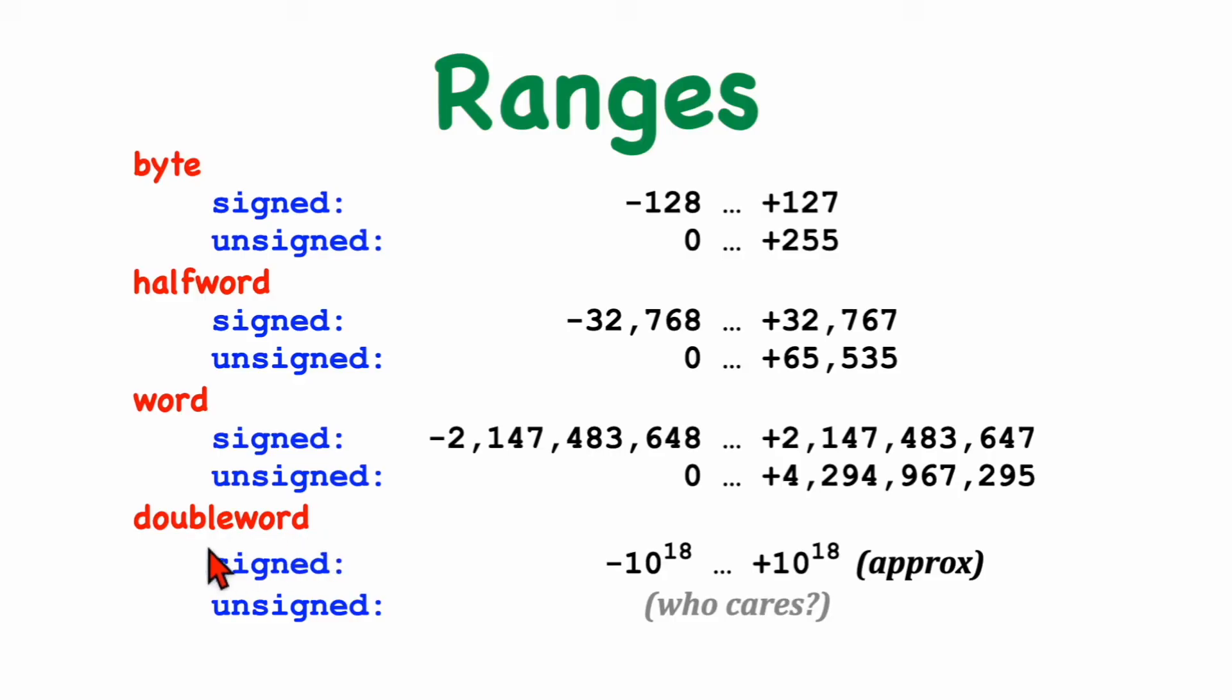With 8-byte integers, that is double word, or 64-bit values, our signed representation is truly huge. It's roughly plus or minus 10 to the 18th.